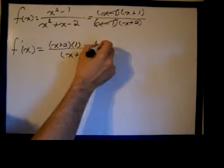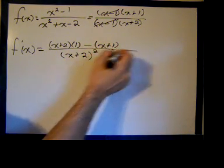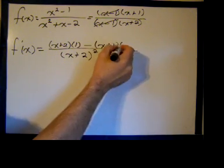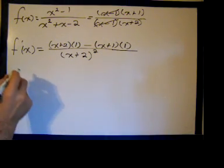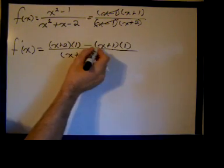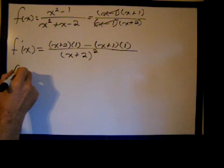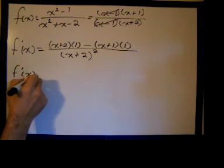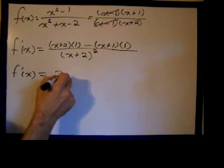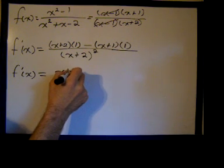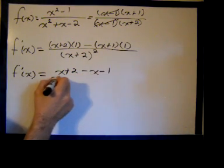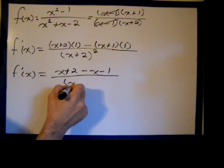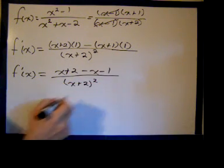minus the numerator x plus 1 times the derivative of the denominator, which is also 1. We'll distribute this negative sign, cleaning up the numerator. We have f prime of x equals x plus 2 minus x minus 1 over x plus 2 squared.